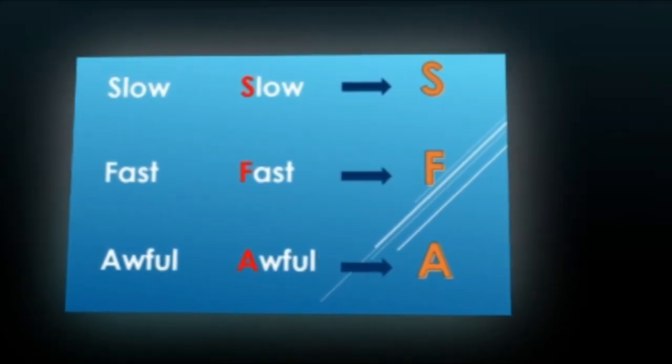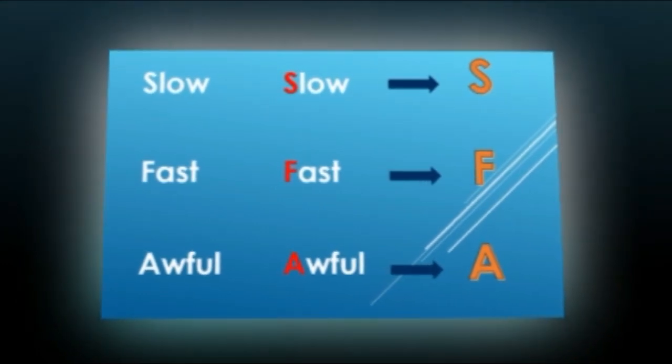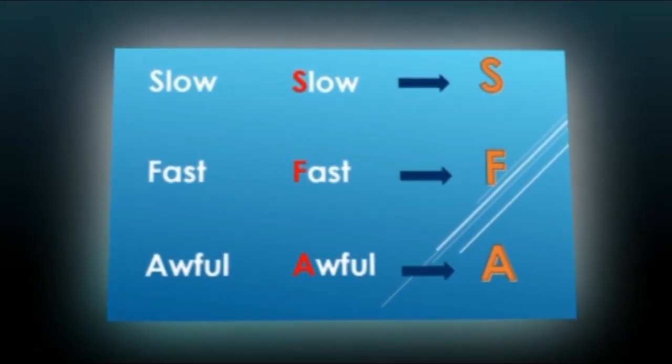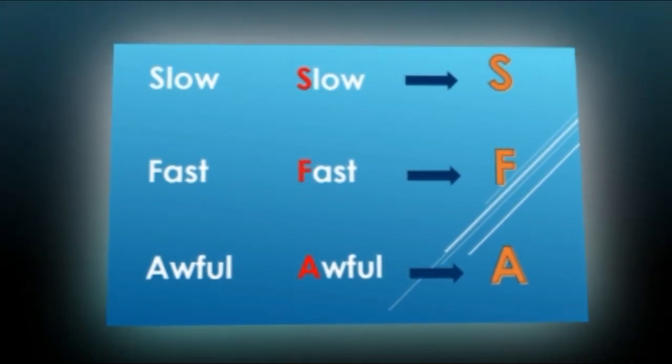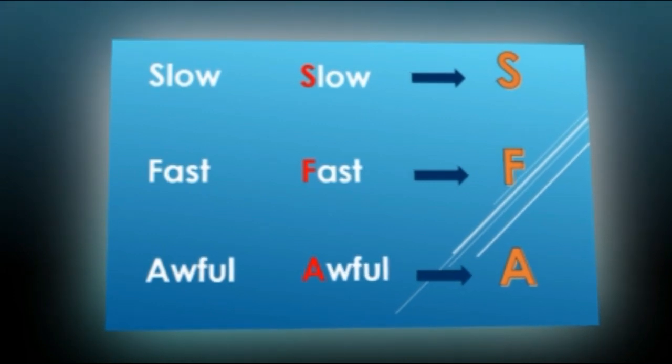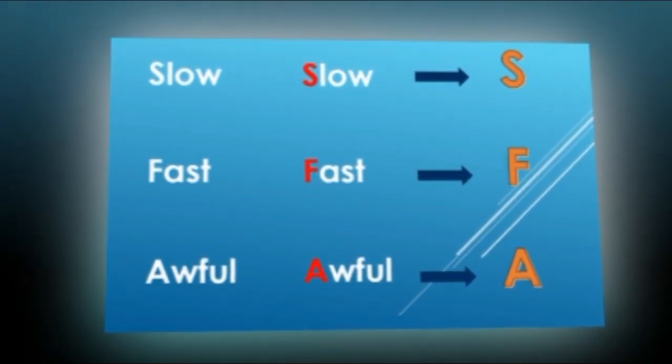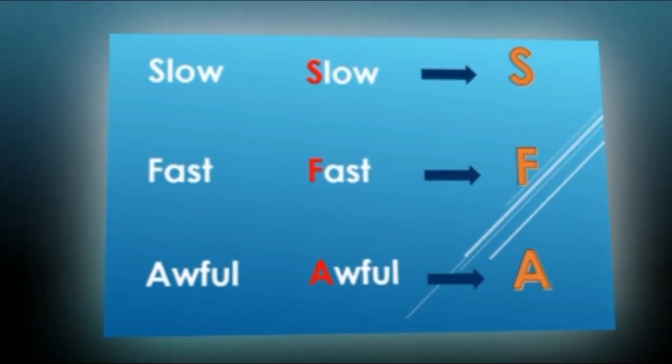as slow, fast, awful, how can we arrange these words according to the alphabetical order? We said that we should look at the first letter. So now we have the first word slow—slow starts with the letter S and